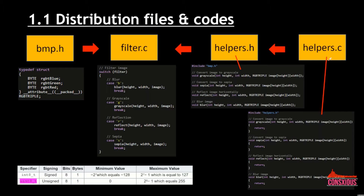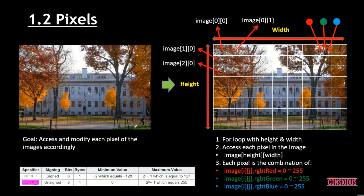Next we have helpers.c, which is the code we need to fill in, then we go into helper.h which links to filter.c. From there we can see there's a switch statement with cases: B for blur, grayscale, reflect, and S for sepia. We will go through them one by one.